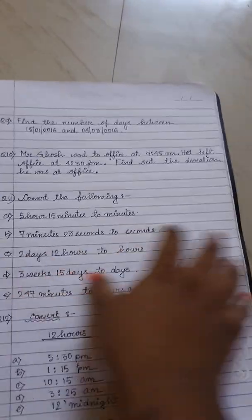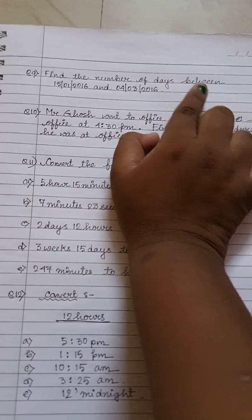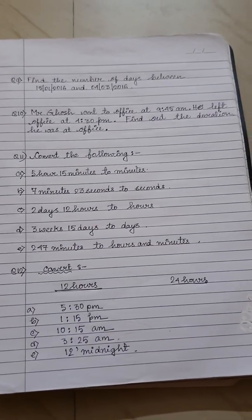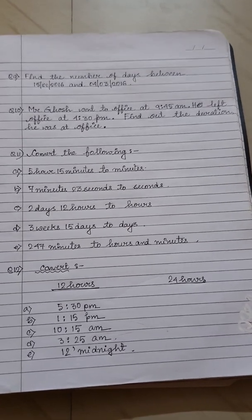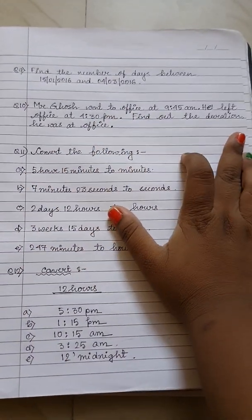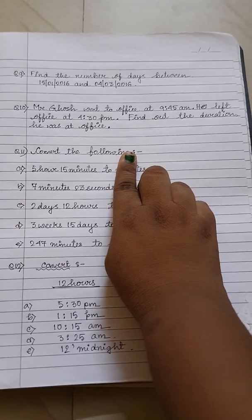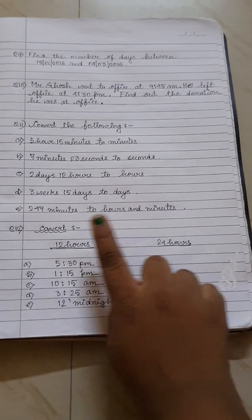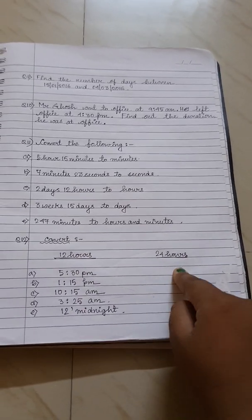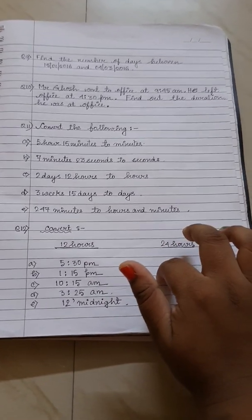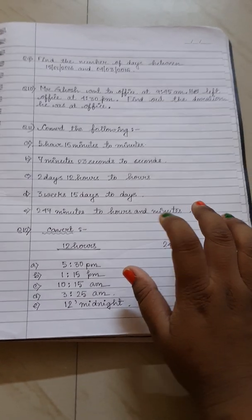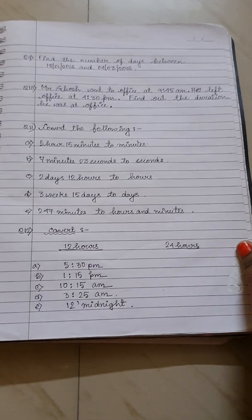Now we go to the next sums. Find the number of days between 15-1-2016 and 4-3-2016. Question 10: Mr. Ghosh went to office at 9:45 AM and left at 4:30 PM — find how long he was at the office. Question 11 has 5 conversions to do, and question 12 covers conversion from 12-hour format to 24-hour format. All 12 sums are your homework — pause the video, take a screenshot, and do them in your maths copy. Till then, stay good, stay happy. Thank you.